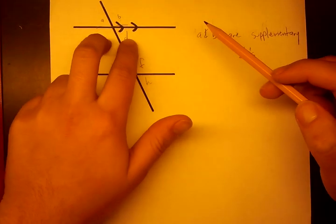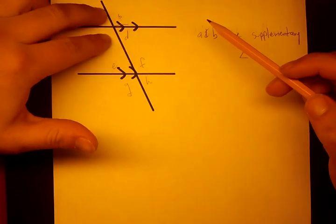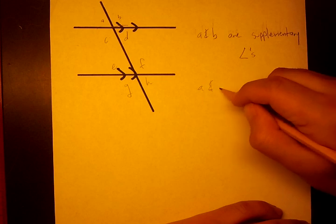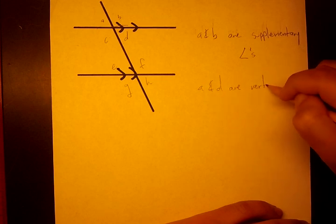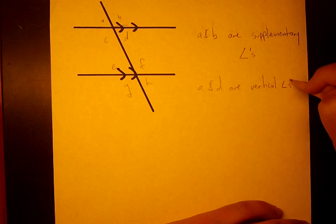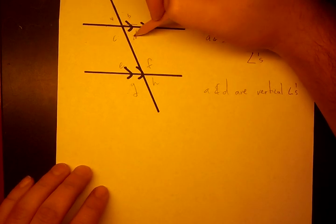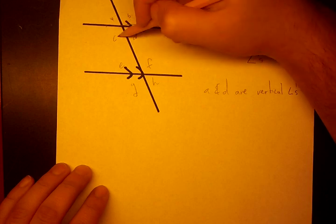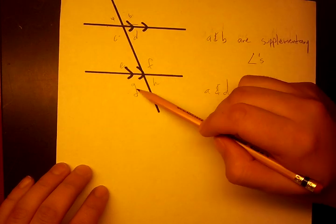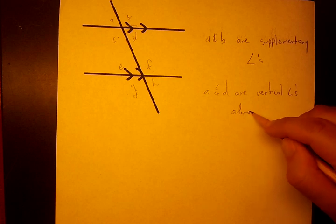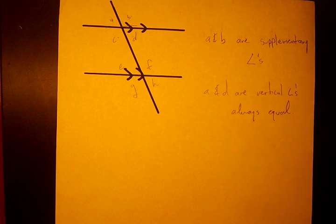By the same argument, C and D are also supplementary. A and C are supplementary. Now A and D are vertical angles. Vertical angles you know because they'll be on opposite sides, like this. A and D, B and C here, or E and H, F and G. Vertical angles are always equal. Always.